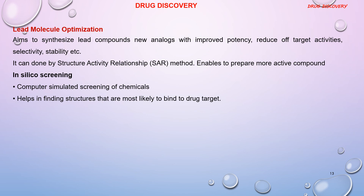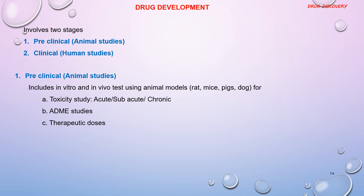Lead molecule optimization can be done by the SAR method or by computer-aided methods. This aims at synthesizing new analogues of the compound with improved potency, reduced side effects, increased selectivity, and stability. Once the chemical identity of the lead compound is discovered, the drug development process starts. It involves two stages — preclinical and clinical studies. Preclinical studies include animal studies done for toxicity, ADME studies, and determining therapeutic doses.